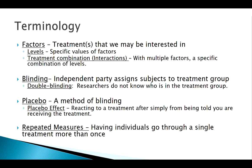Replication means repeating the experiment as much as possible. One obvious way is having a lot of people in your study. Another way is through repeated measures, where individuals go through the process more than once. This eliminates variability in a person's reaction — if a person goes through something five times and you take the average, you get much more accurate results than if they only did it once.